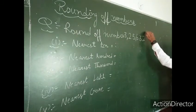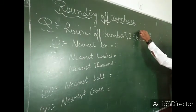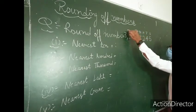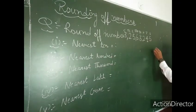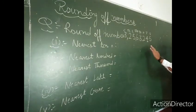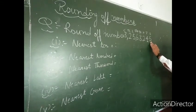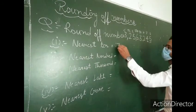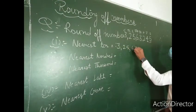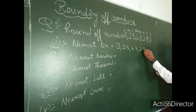For rounding to nearest 10, we first write the place values of this number: ones, tens, hundreds, thousands, ten-thousands, lakhs, ten-lakhs, and crore. The required place is the tens place. The rule is: if the digit on the right-hand side of the required place is equal to 5 or greater than 5, we add 1 to the required place digit. Here the digit is 4, which equals 5 — so we add 4 plus 1 = 5, and the right-hand side digit is replaced by 0. Result: 3,25,63,250.